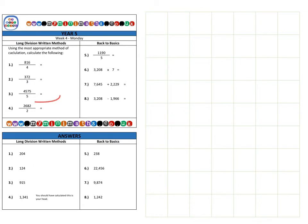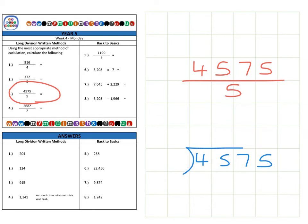Next we're on to question three, which is 4575 divided by five. So let's place that into the formal method below: 4575, and we're going to divide that by five. So first of all, how many fives fit into four? Well we can't fit it, it's too big, so nothing.